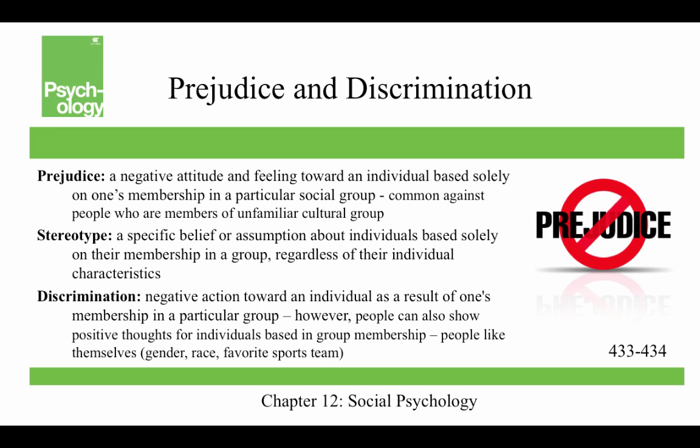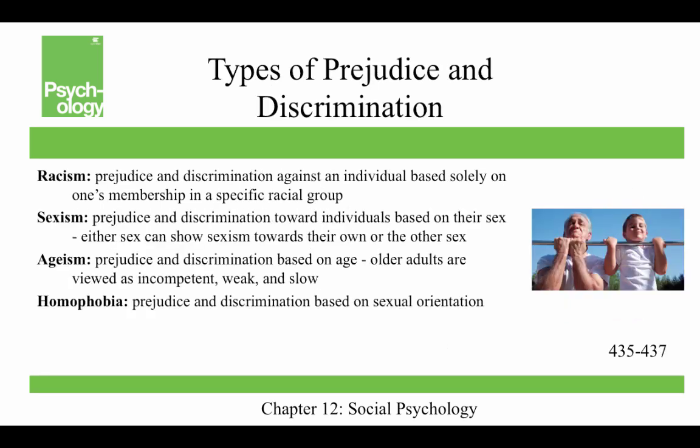Prejudice is a negative attitude and feeling towards an individual based solely on their membership in a particular social group, and it's common against people who are members of an unfamiliar cultural group. If you have people imagine themselves having a positive interaction with someone from a different group, that can lead to increased positive attitude toward the group. A stereotype is a specific belief or assumption about individuals based solely on their membership in a group, regardless of their individual characteristics, and prejudice often begins as a stereotype. Discrimination is a negative action towards an individual as a result of one's membership in a particular group. People also show positive thoughts for individuals based on group membership — people like people who are like themselves, whether by gender, race, or even favorite sports team.